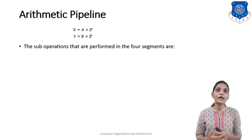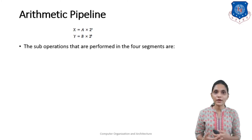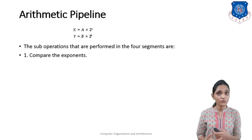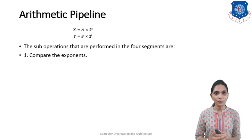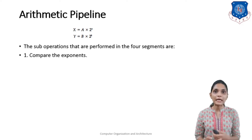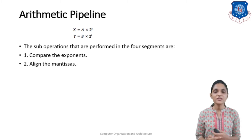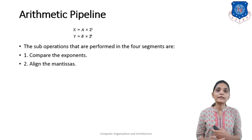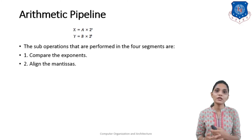The sub-operations required to perform addition or subtraction of two floating point numbers can be divided into 4 pipeline stages. First, you will compare the exponents. For addition or subtraction, the exponents must be equal — only then can you perform addition or subtraction of the mantissa. So your exponents a and b should be equal. Second, you will align the mantissa. If the exponents are not equal in the first segment, you must align the mantissa according to the exponent.